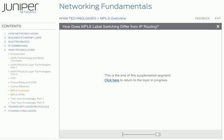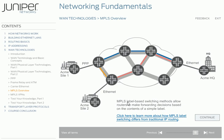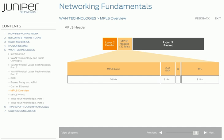We mentioned earlier that some people refer to MPLS as a Layer 2.5 technology. The MPLS header is sometimes referred to as a SHIM header because it's located between the Layer 2 and Layer 3 headers. Because the label is inserted between the Layer 2 and Layer 3 header, a single LSP can traverse Frame Relay, PPP, and Ethernet networks.